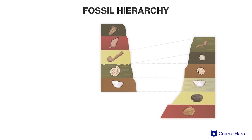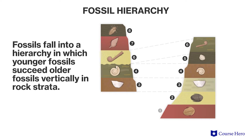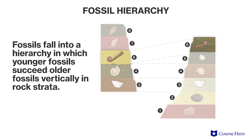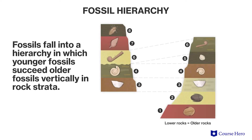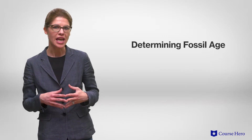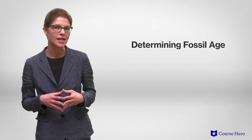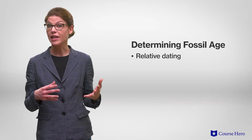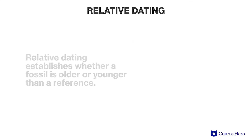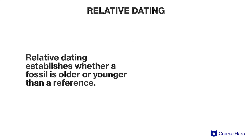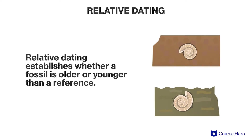According to the law of fossil succession, fossils fall into a hierarchy in which younger fossils succeed older fossils vertically in rock strata. While the order of fossils in rock strata tells us the sequence in which fossils were laid down, it doesn't reveal their actual or absolute ages. We can find out the age of a fossil in one of two ways: either by relative dating or absolute dating. Relative dating involves establishing whether a fossil is older or younger than a reference, which might be a rock layer or an easily dated fossil.